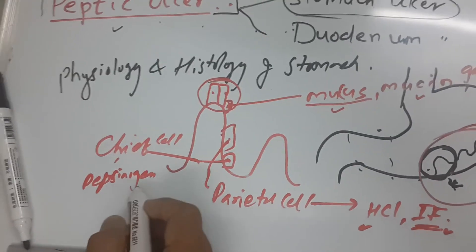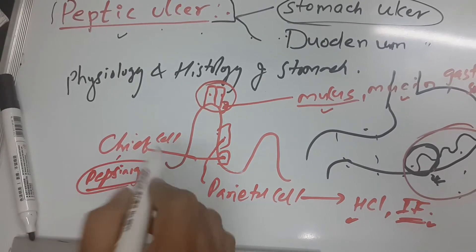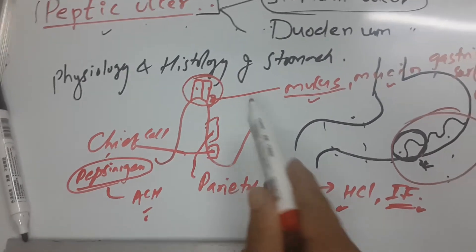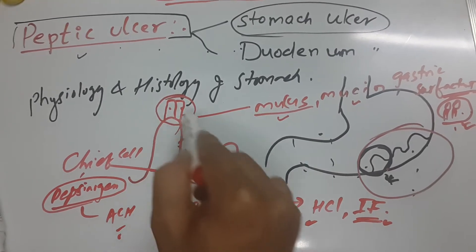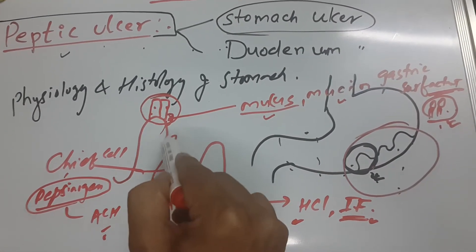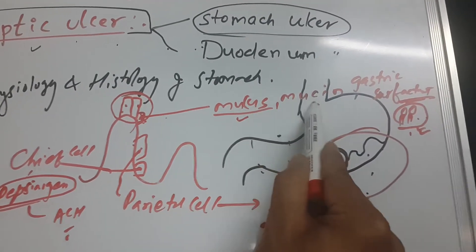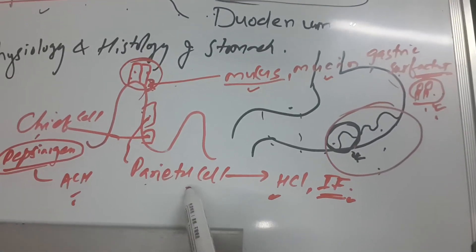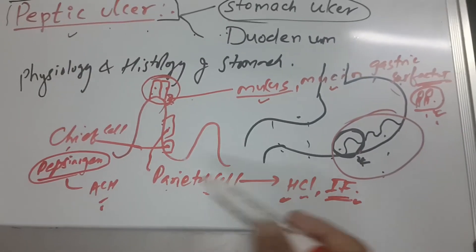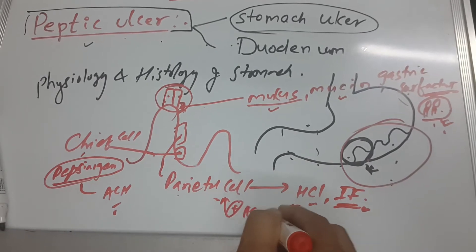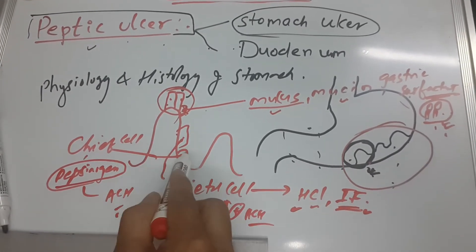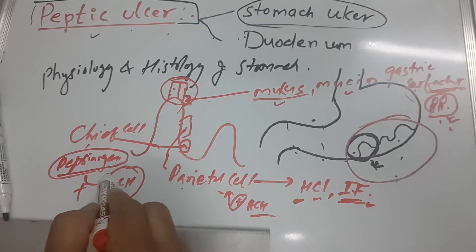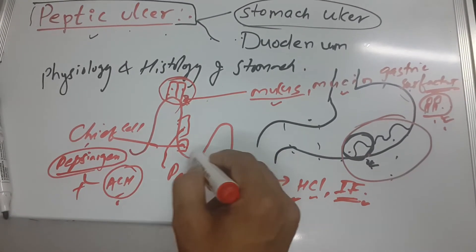Pepsinogen is stimulated by acetylcholine. The parietal cells are also stimulated by acetylcholine, meaning the parasympathetic system. And the chief cells, which secrete pepsinogen, are likewise stimulated by acetylcholine.